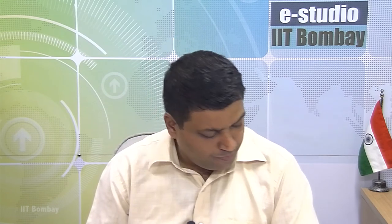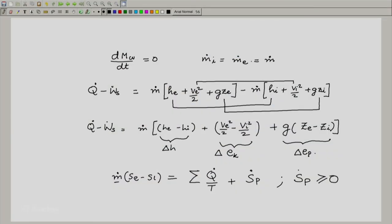And finally, for the second law we can write that the entropy change with time for the control volume is 0 and hence we can write the equation as follows: m dot (s_e - s_i) = sum of Q_dot/T + S_dot_gen, where S_dot_gen is greater than 0. So we have just transposed m dot s_e minus s_i on the left side and we have used only one expression for m dot and this is the equation we get once we have assumed that s of the control volume does not change with time.